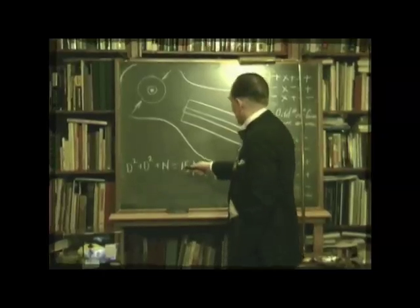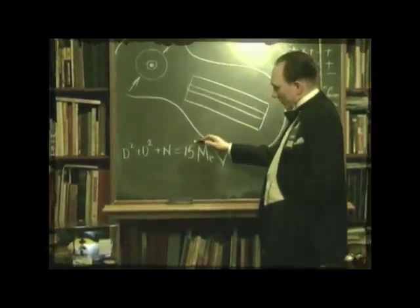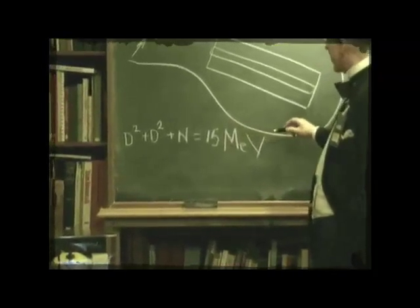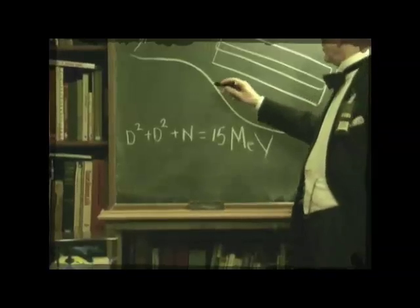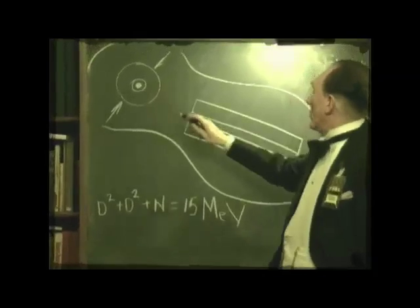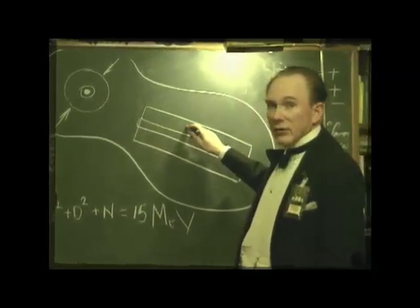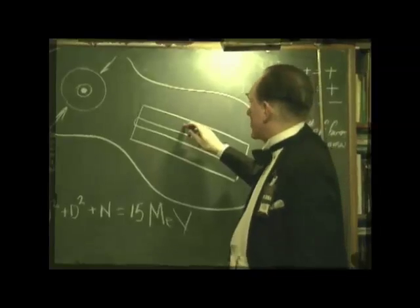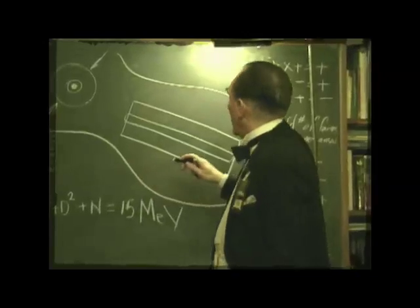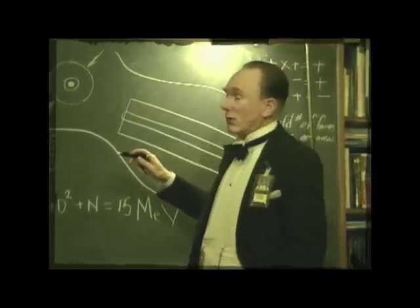d² + d² + n will result in a 15 million electron volt surge which will effectively when projected from the primary here ignite the secondary, which is what people are popularly calling a hydrogen bomb, properly a thermonuclear reaction.